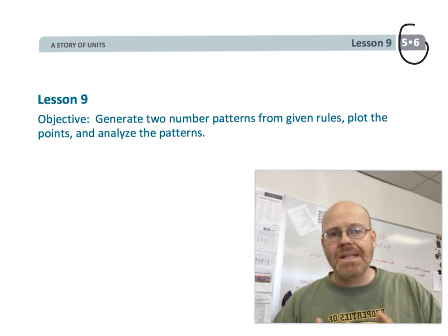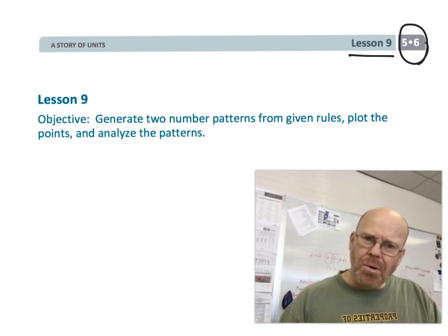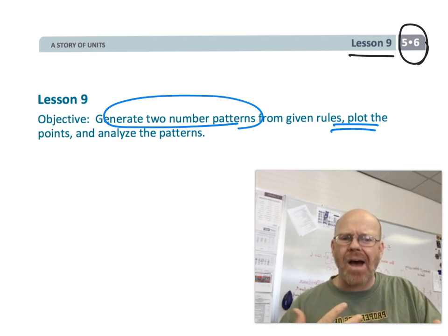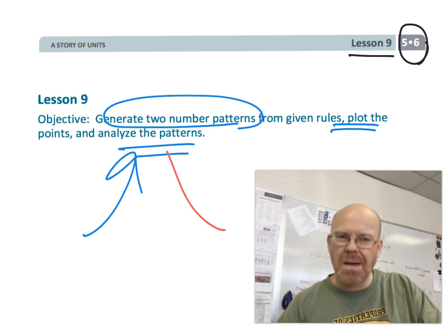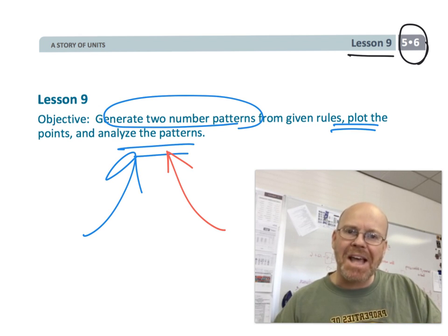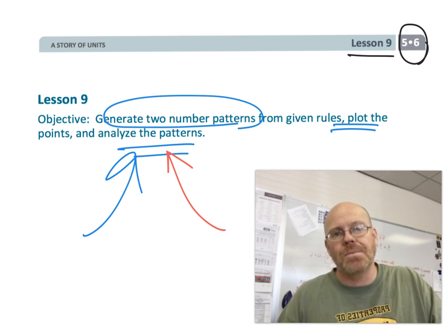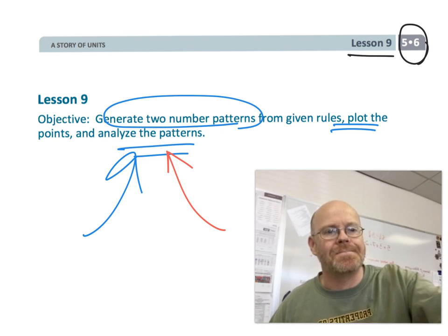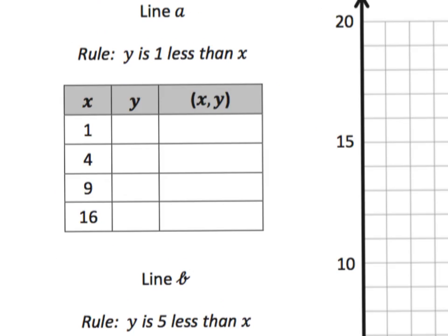This is fifth grade module six lesson nine. In this lesson, students are going to be generating patterns, drawing points on lines, and looking at how those lines relate to one another. They're going to be comparing and contrasting the rules with the tables and the graphs — putting a lot of stuff together — and all of this is leading students towards the ratios and proportions they'll learn in sixth grade. We have two rules, and we'll fill in the tables, then graph and compare them.